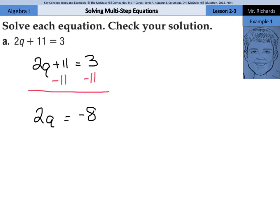Next, in order to get the q alone, we need to get rid of the 2, and so if we divide by 2 on both sides, we're left with q equals negative 4.